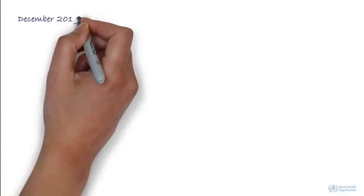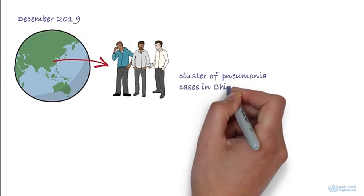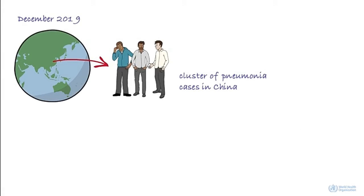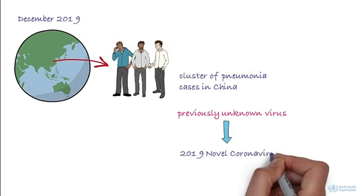In December 2019, there was a cluster of pneumonia cases in China. Investigations found that it was caused by a previously unknown virus, now named the 2019 novel coronavirus.